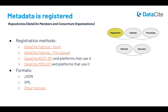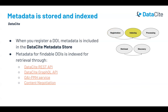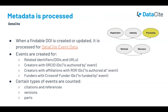No matter which method you choose to register a DOI, the metadata will go through the same process. When you register a DOI, the metadata is included in what we call the Datasite Metadata Store. Metadata for findable DOIs is then indexed, so it can be retrieved by users of Datasite's APIs and services. When a DOI is created or metadata is updated, we also process it for Datasite Event Data.